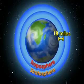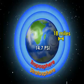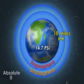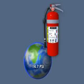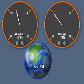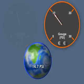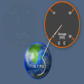The atmospheric pressure at sea level is fourteen point seven PSI, greater than the absolute zero pressure of deep space. In most situations we really only care how much pressure exists in excess of atmospheric pressure. This is referred to as gauge pressure; gauge pressure uses atmospheric pressure as its zero point.